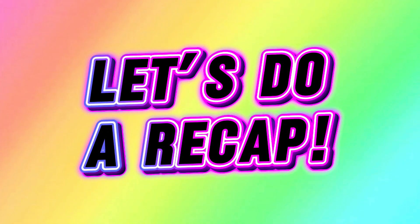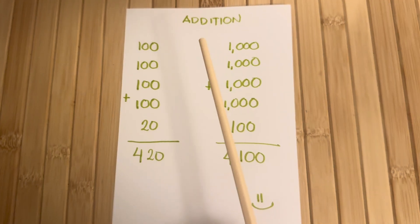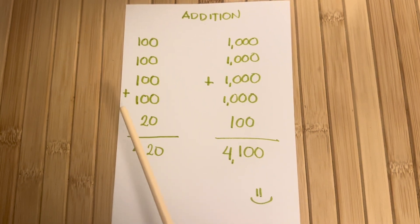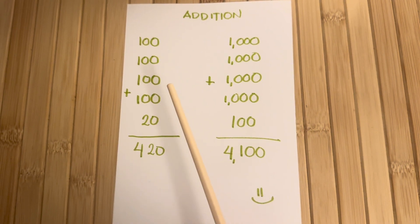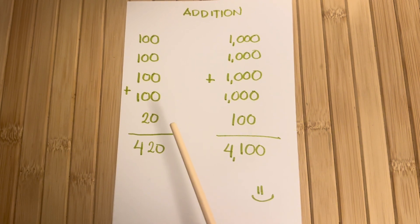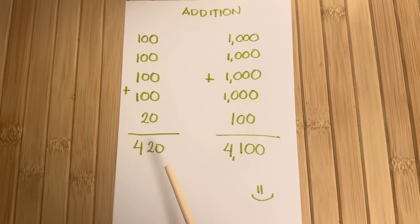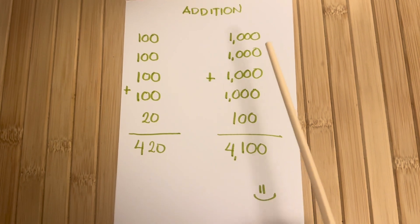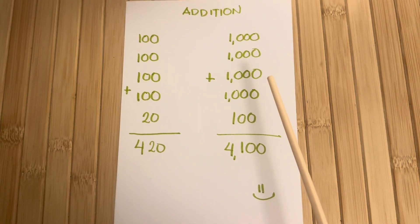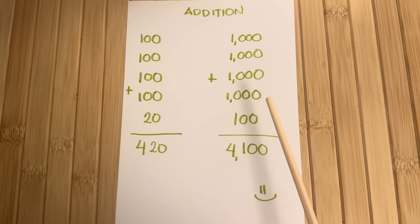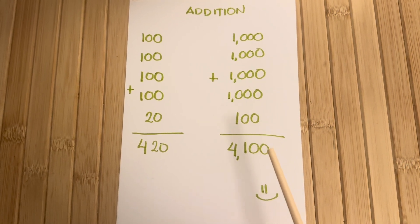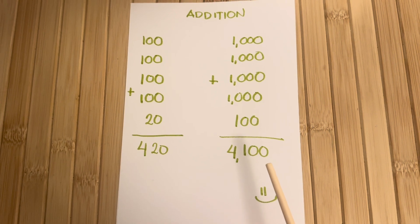Let's do a recap. Let's learn addition: 100 plus 100 plus 100 plus 100 plus 100 plus 20 is equals to 420. 1,000 plus 1,000 plus 1,000 plus 1,000 plus 100 plus 100 is equals to 4,100.